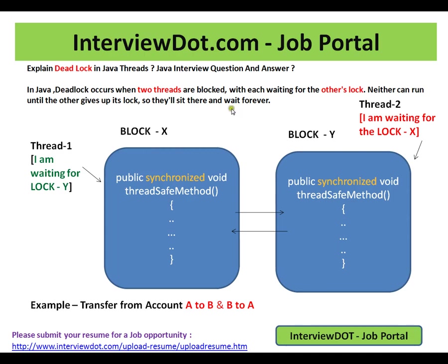When exactly will it happen? For example, you have two blocks of code, block X and block Y, and these two blocks are synchronized methods — thread-safe methods. They should run in an atomic way. If these two methods have 10 lines of code, those 10 lines should be executed atomically in a single transaction, and when one thread is executing, the other thread should never enter, because inside the thread-safe method they are handling shared data.